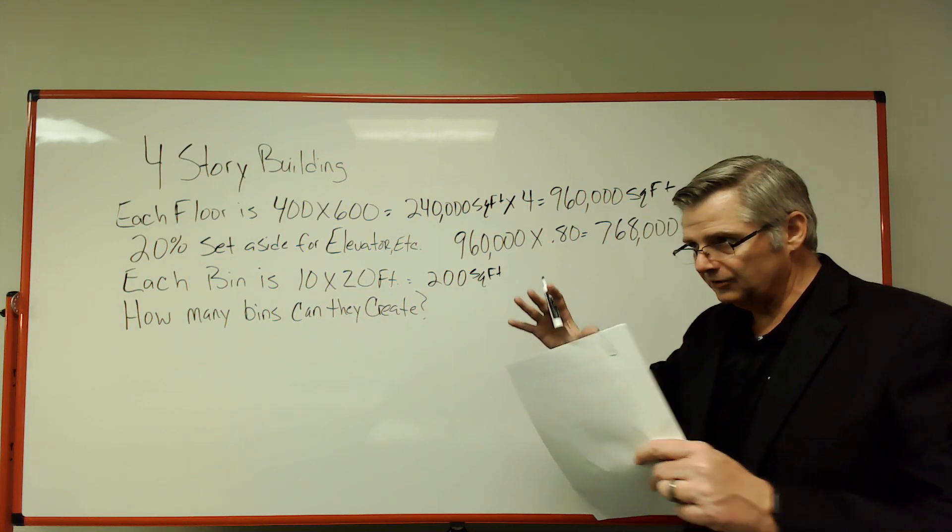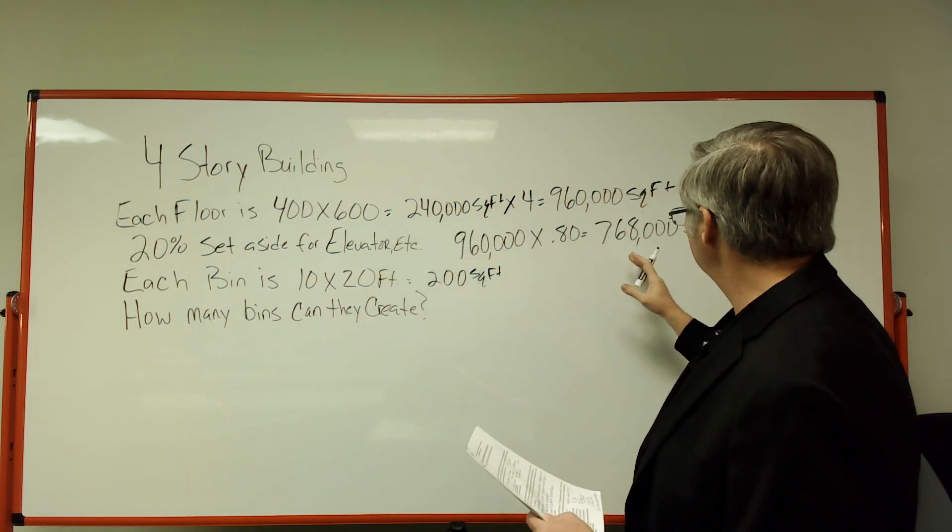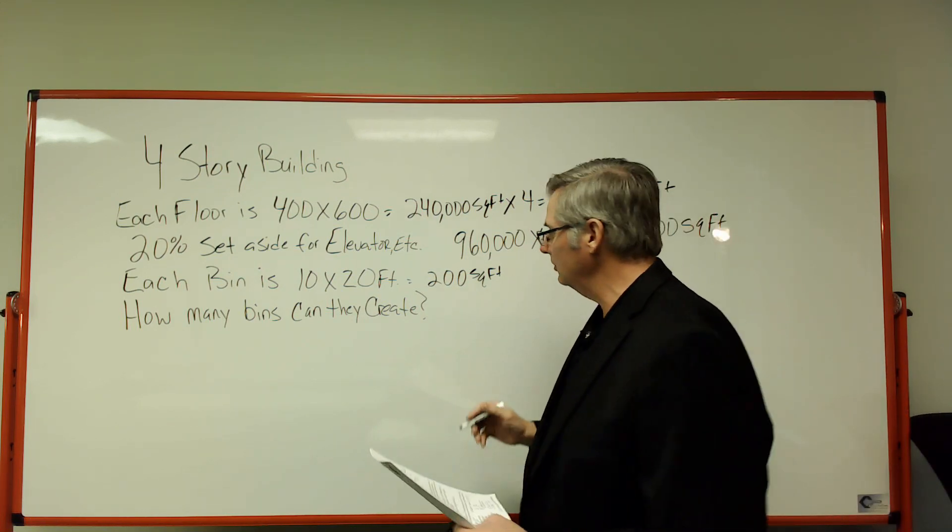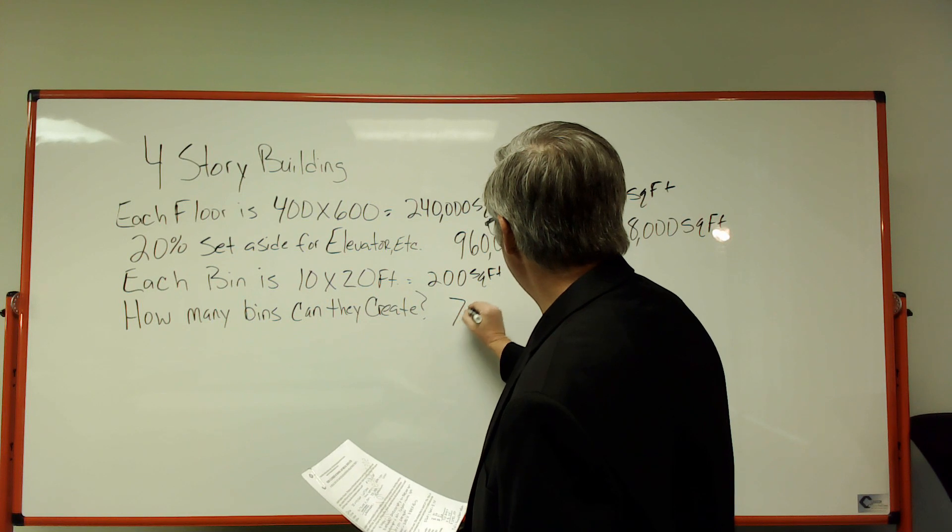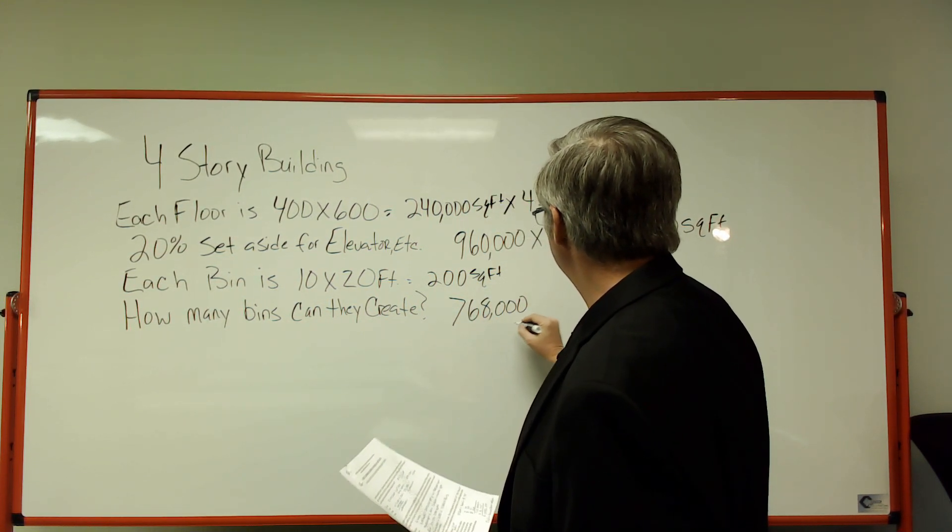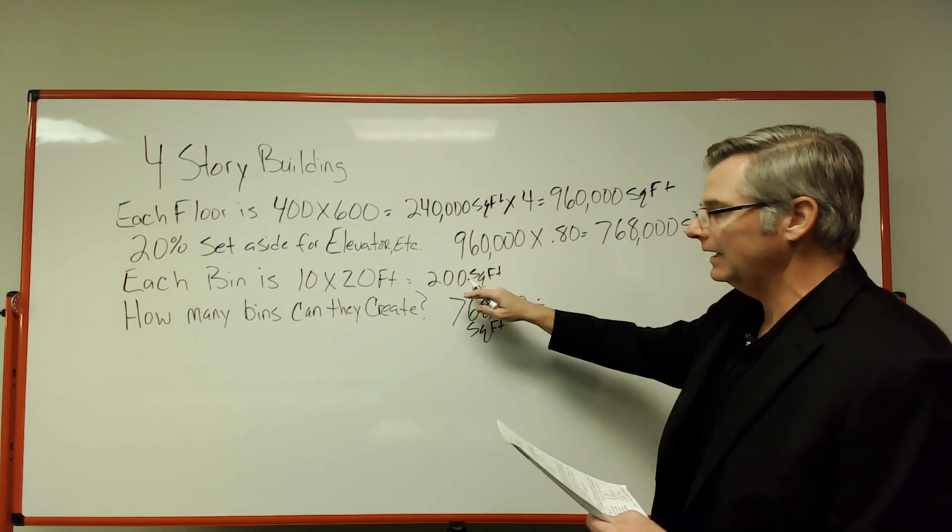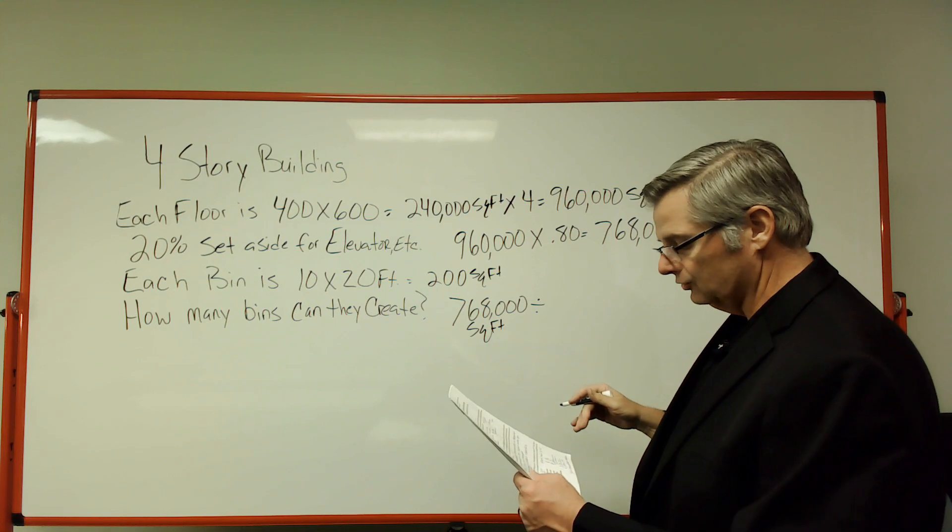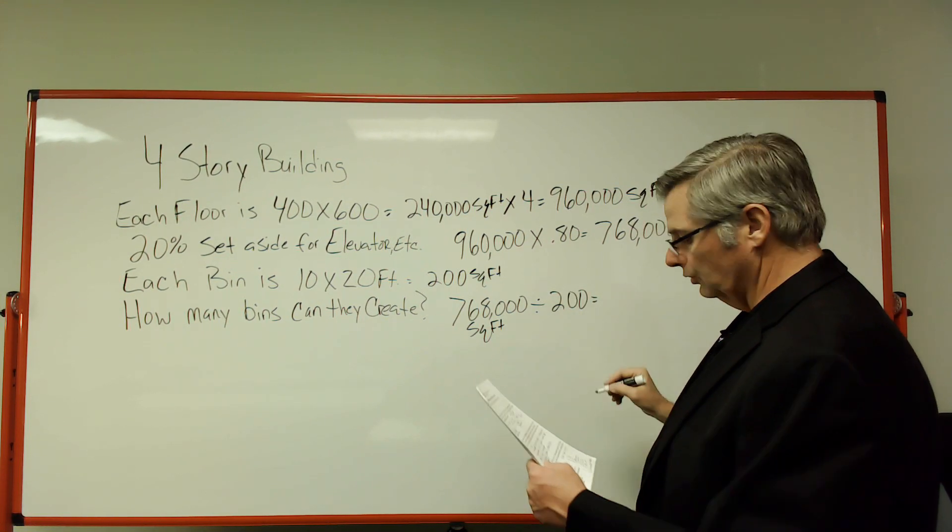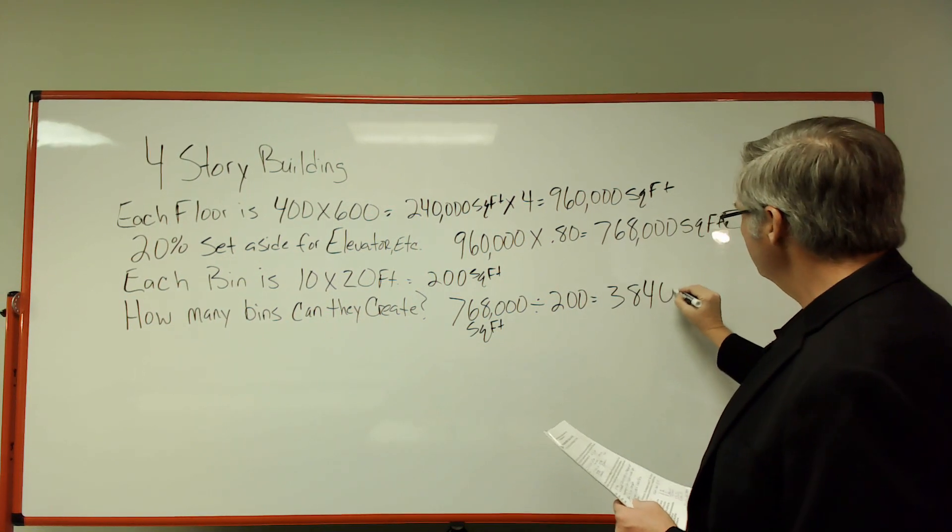We've got these bins are 200 square feet. We've got 768,000 square feet to work with. So I'm going to take that 768,000 square feet and divide that by 200, because I need to find out how many I can fit in this 768,000 square feet. That gives me 3,840 bins.